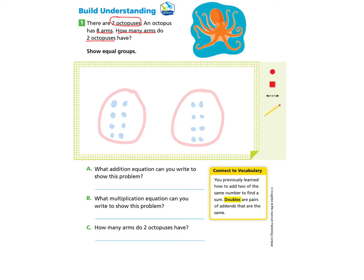Now I can answer the questions below. Which addition equation can you write to show this problem? What I'm seeing is there are two groups of eight, and they're asking for an addition equation. There are eight arms here and eight arms here, so the addition equation we can write is 8 + 8 = 16.